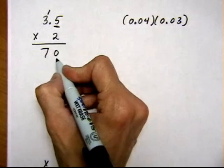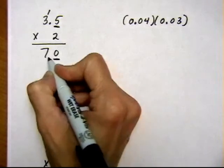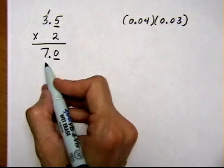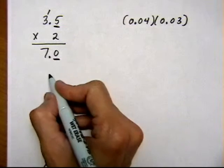So I'm going to make sure my answer has one decimal place also and put the decimal point wherever it has to be to make that happen. So the answer is 7.0 or 7.